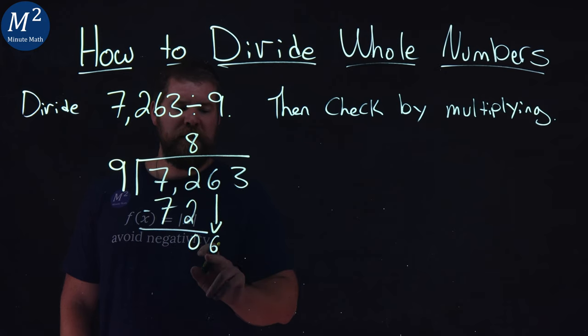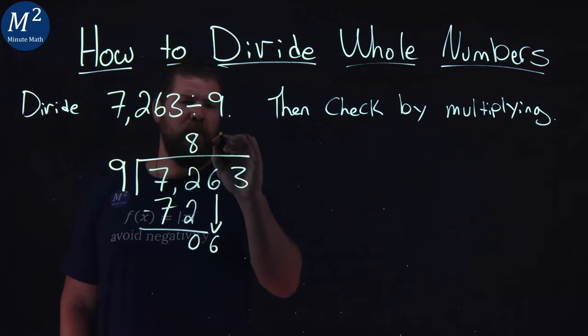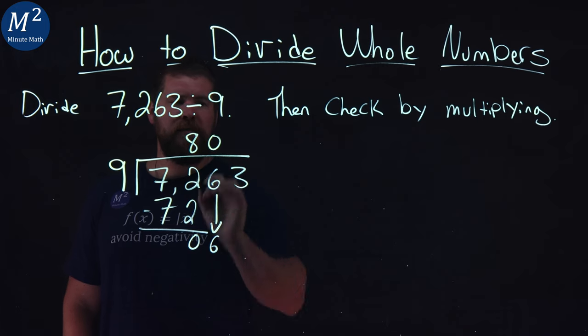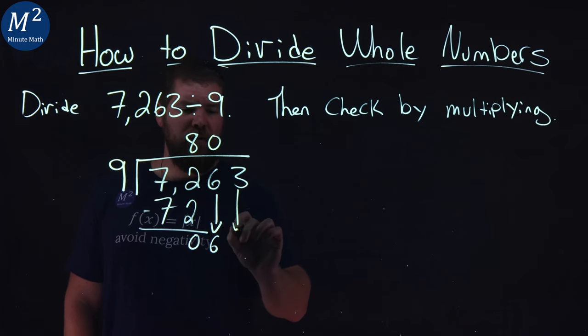Does 9 go into 6? No, it can't. So I'm going to have a place value here for the 0 and then I'll bring down the 3 as well.